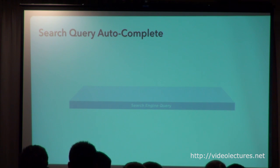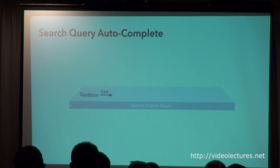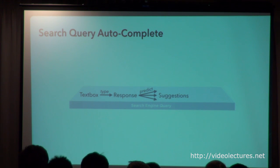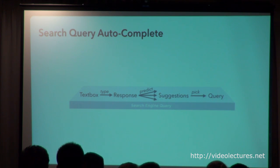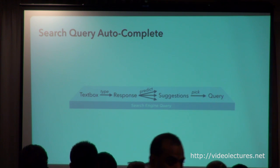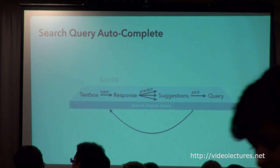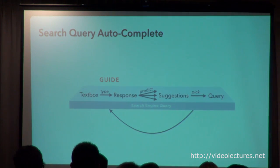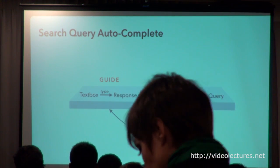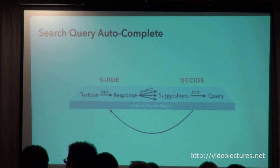Let's look at a schematic of how something as simple as Google Autocomplete works. We start by typing into a text box and get an immediate interactive response. Then it kicks off a set of predictions — a query runs, autocomplete predictions come back, they're ranked and presented, and then the user can select among them or continue typing. This is what we call the Guide-Decide Loop: the user provides input to guide an automated system searching through possible completions, and then decides whether to accept a recommendation or take an alternative path.